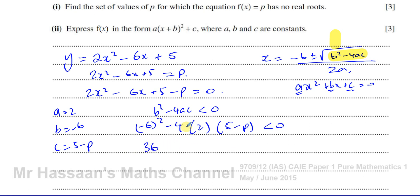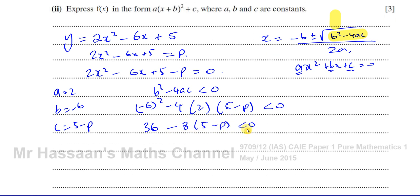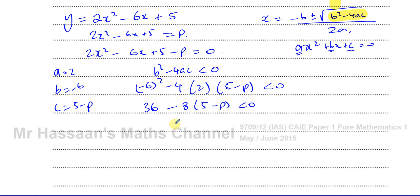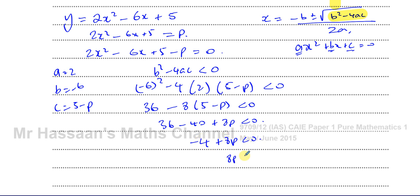Substituting: (−6)² − 4(2)(5 − p) < 0, which gives 36 − 8(5 − p) < 0, so 36 − 40 + 8p < 0, giving −4 + 8p < 0. Therefore 8p < 4, so p < 4/8, which simplifies to p < 1/2.